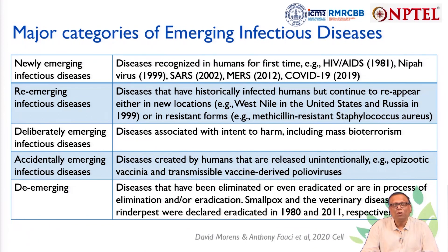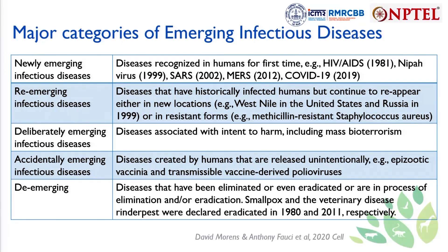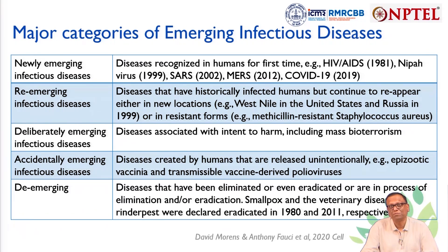We normally categorize emerging infectious diseases into five broad categories. The first is newly emerging infectious diseases, where diseases are recognized in humans for the first time — for example, HIV/AIDS recognized from 1981, the Nipah virus, SARS, MERS, and the present COVID-19.